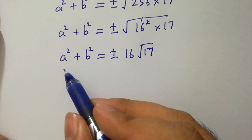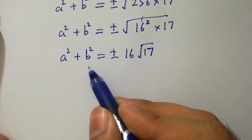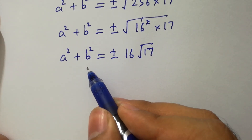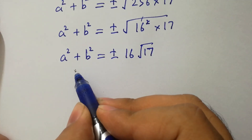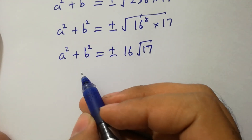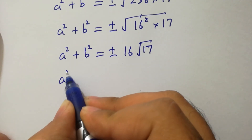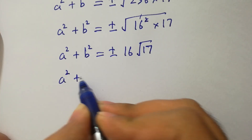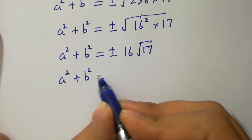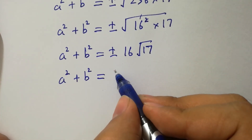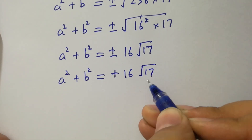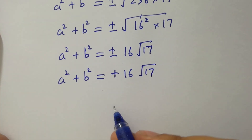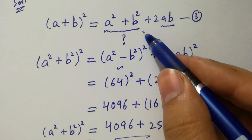Take square root on both sides to find a squared plus b squared. Since a squared and b squared are non-negative, their sum must also be non-negative. So a squared plus b squared equals positive 16 root 17.